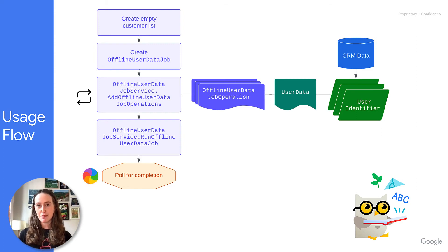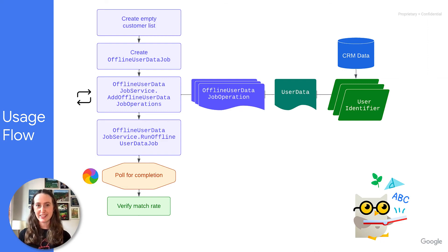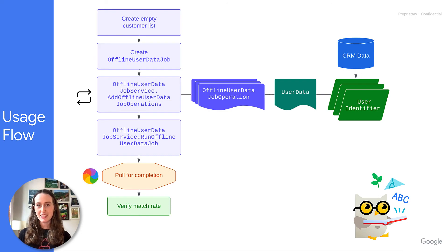It can take as little as 10 minutes or as long as 24 hours for a job to complete. Once complete, verify the match rate to ensure it meets expectations and your list has enough users to be targeted. Match rates can vary widely depending on how active your users are on Google Search, Gmail, or YouTube. If your match rate is lower than expected, it's also possible that the data was not formatted or hashed correctly before uploading.